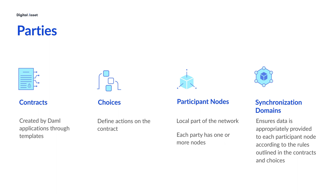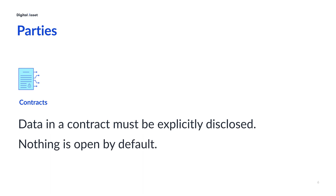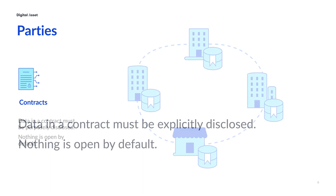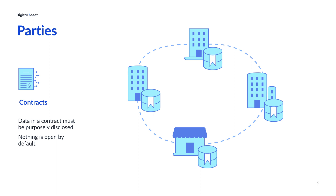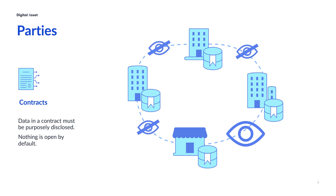Although there are several components in this network of domains, nodes, contracts, and choices, it is with contracts and choices that privacy is established. The contract dictates what data the parties can see in a contract and the choices on that contract. As a general rule, data in a contract must be purposely disclosed to parties, so a DAML application running on the Canton network requires explicit disclosure of data at each level. For example, if I have a choice where I'm taking an action of selling an asset between two parties, I would specify which two parties can see that selling action.